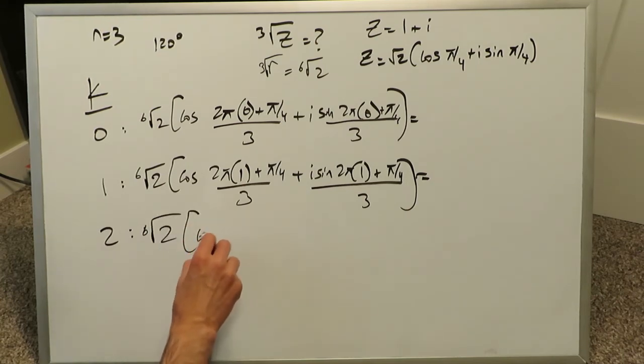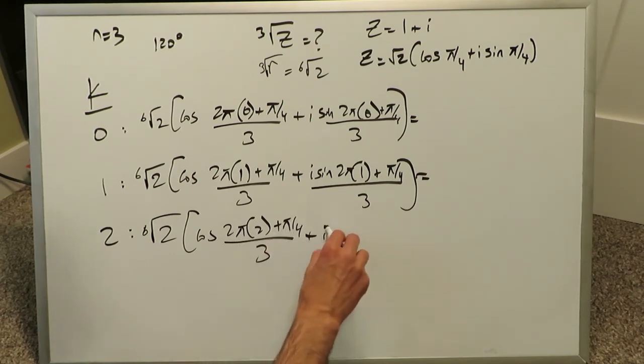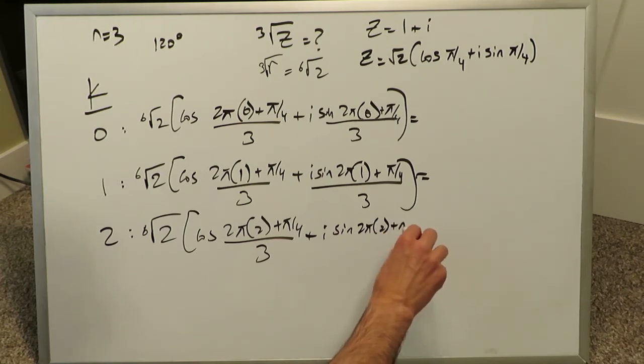And we're coming down to the k value of 2, we're going to have a cosine over here, 2 pi times this 2, which is a k value here of 2, plus pi over 4, over 3, plus i sine 2 pi times 2, plus pi over 4, over 3.